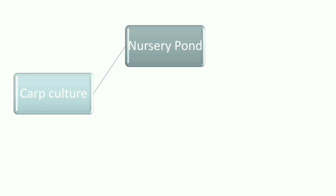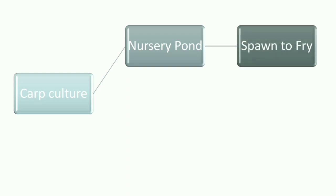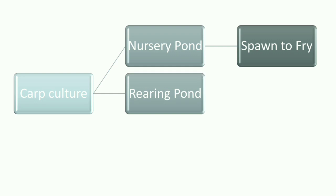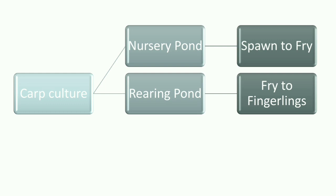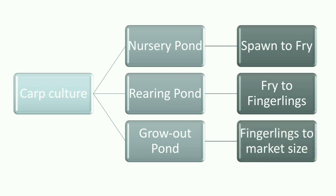Carp culture is divided into three pond types: nursery pond, where spawn is cultured to fry; rearing pond, where fry is grown to fingerling stage; and grow-out pond, where fingerling is grown to marketable size. In this part, we will study only the nursery pond. Rearing pond and grow-out pond will be covered in the next part.